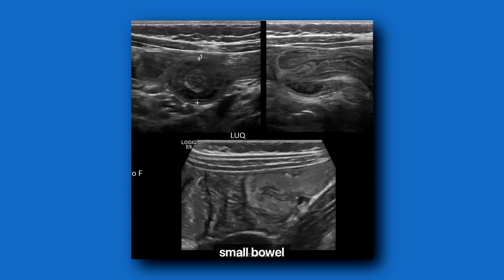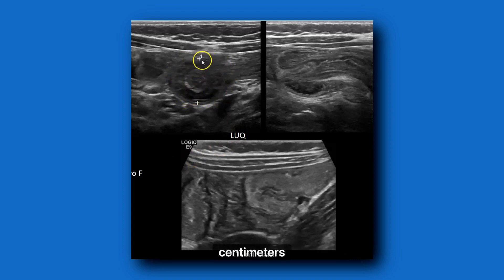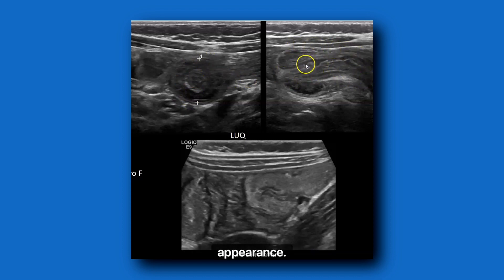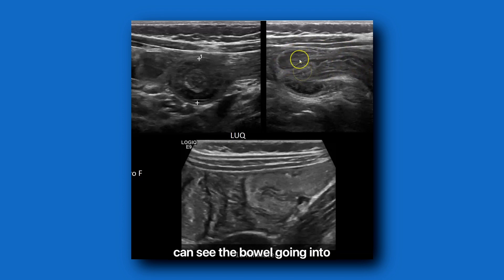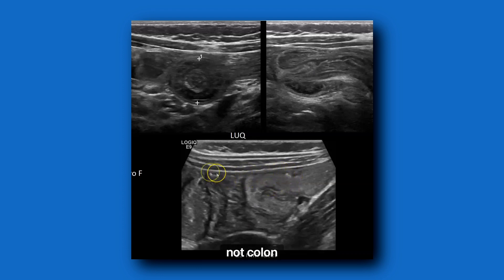Lastly, here's another example of a small bowel intussusception, this one in the left upper quadrant. You can see the size is not very large — about 1.5 centimeters. In longitudinal, it's not really much of a pseudokidney appearance, but you know it's an intussusception because you can see the bowel going into itself — there's inner bowel and outer bowel. 15 minutes later, the small bowel is just regular. You can see this thin-walled bowel with no haustra, so you know it's not colon.